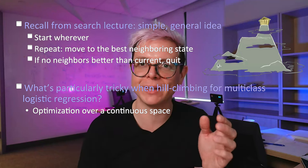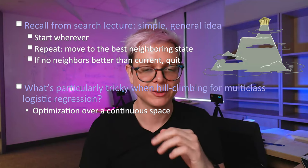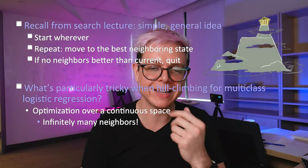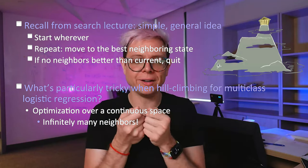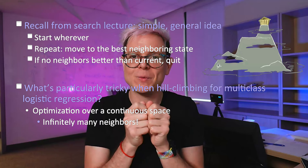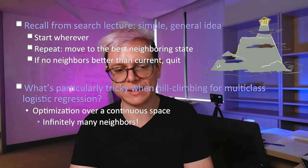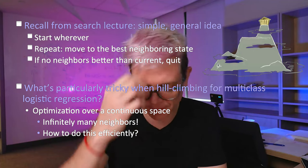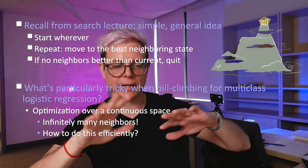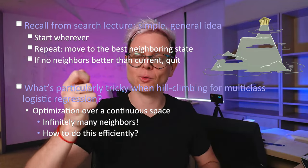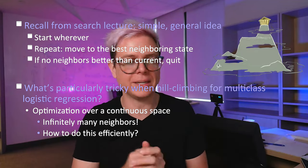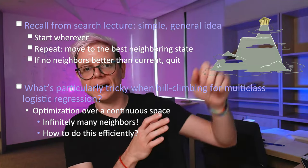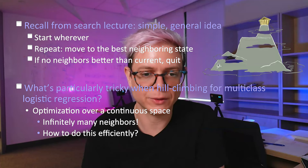We're in a continuous space — ouch. There are infinitely many neighbors. I'm at a specific vector; everything is my neighbor. That sounds daunting. How to do this efficiently? It turns out that since the space is continuous, we have a tool we didn't have for discrete spaces, which is very convenient — it tells us in what direction the function goes up. Let's figure out how this works. Calculus! We love calculus.